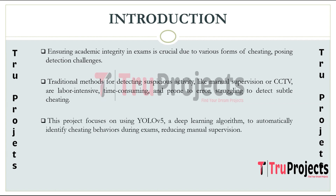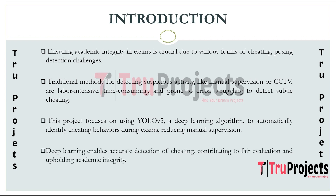This project focuses on developing a system for detecting suspicious activity in exams using YOLOv5, which is a deep learning-based object detection algorithm, to automatically identify suspicious behavior such as cheating. By utilizing deep learning, the system can analyze exam footage in real time, accurately detecting and flagging any irregularities. This approach reduces the need for manual supervision.